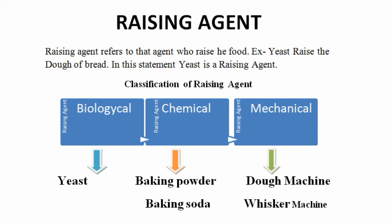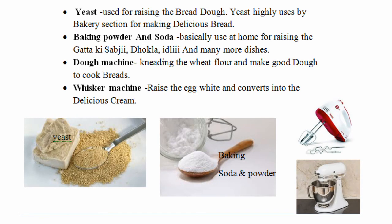Baking soda and baking powder are chemical raising agents. Yeast is a biological raising agent. In mechanical raising agents, there is the dough machine and the whisk — the dough machine kneads wheat flour or ground flour and raises it, making it a mechanical raising agent. Thank you for watching my channel. Please like and subscribe, and if you have any questions please inbox me and I will answer them. Thank you.